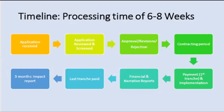After approval or revision, you enter the contracting period. If rejected, we provide reasons — though generally very few applications are rejected at this stage, and we usually inform you early if your application aligns with our mandate. After contracting, we pay the first tranche and you begin implementation. You then submit financial and narrative reports to receive the last tranche. Importantly, please submit an impact report after three months — we're very unlikely to issue future funds to partners who haven't indicated the impact of the grant.